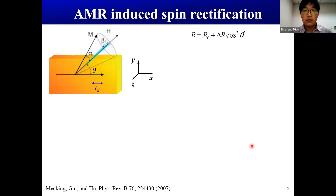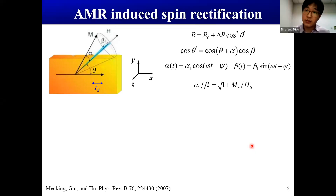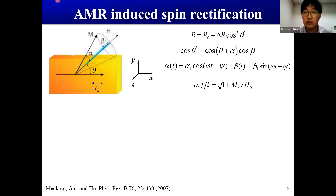In addition to the inverse spin Hall effect, there are artifacts such as spin rectification due to anisotropic magnetoresistance (AMR). In ferromagnetic metals, due to AMR, the resistance depends on the magnetization direction. When the ferromagnet precesses, its resistance oscillates at a certain frequency. If we also have an in-plane RF current at the same frequency, the coupling between the RF current and the RF resistance will result in a DC-rectified voltage — this is AMR-induced spin rectification.